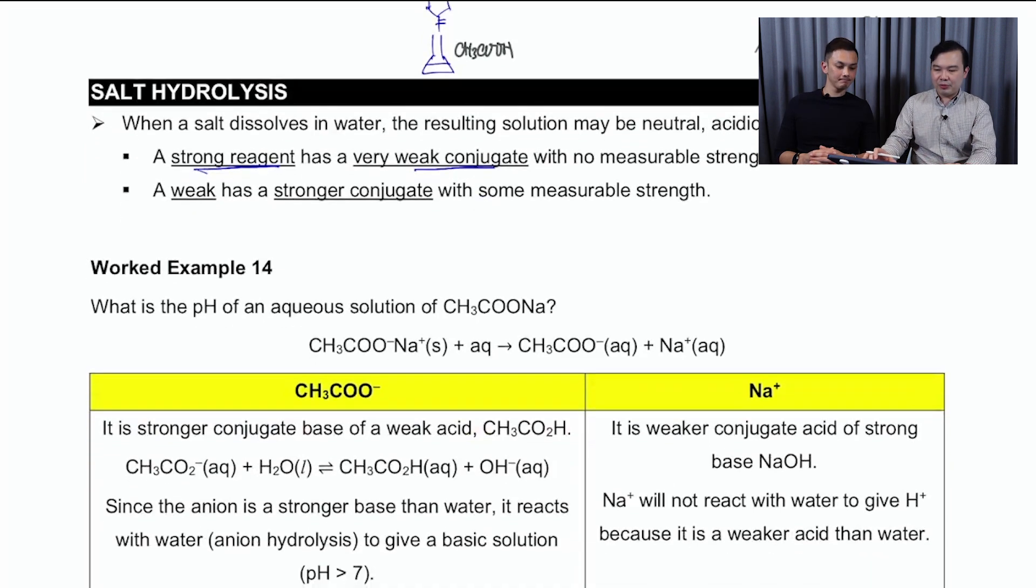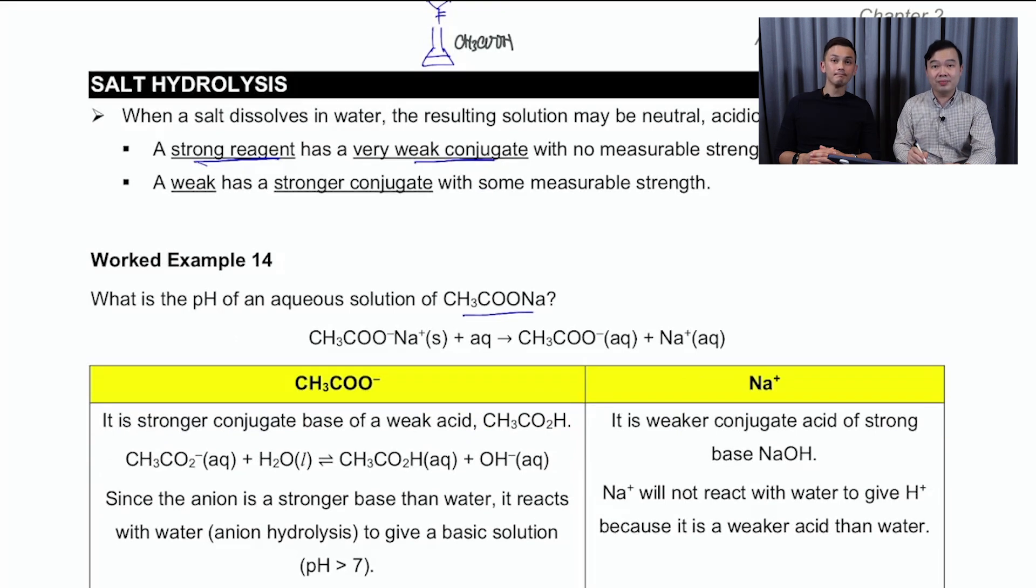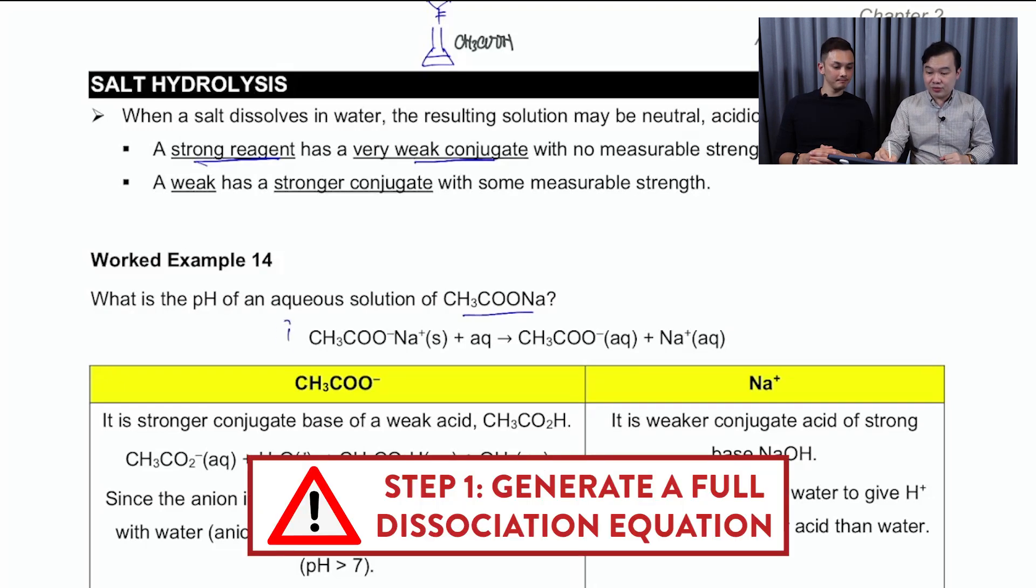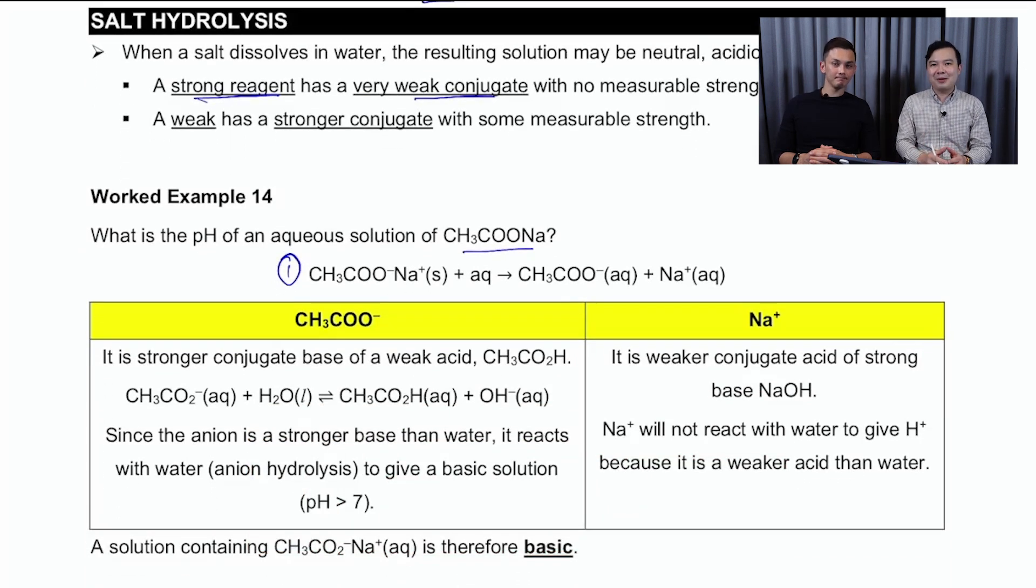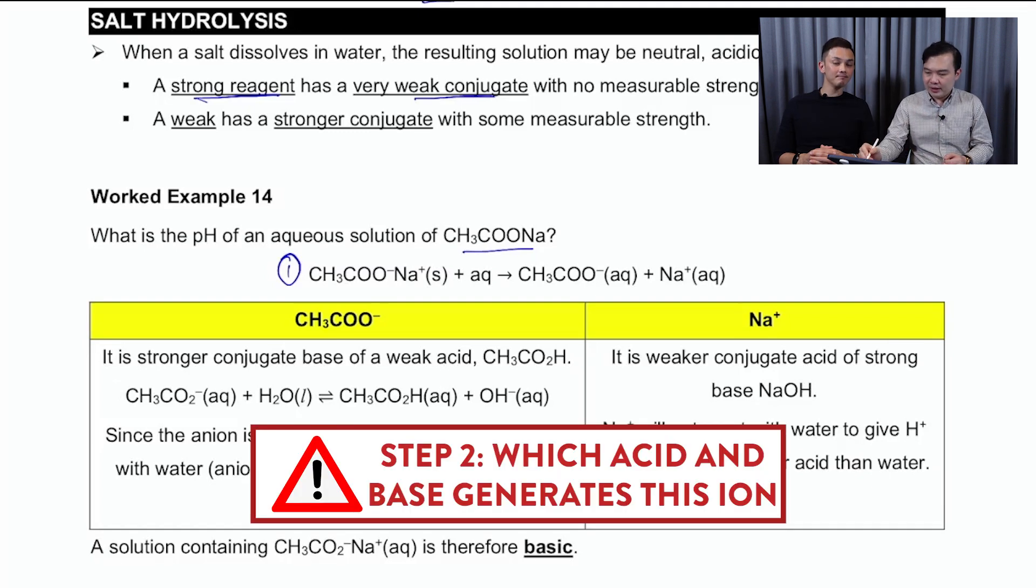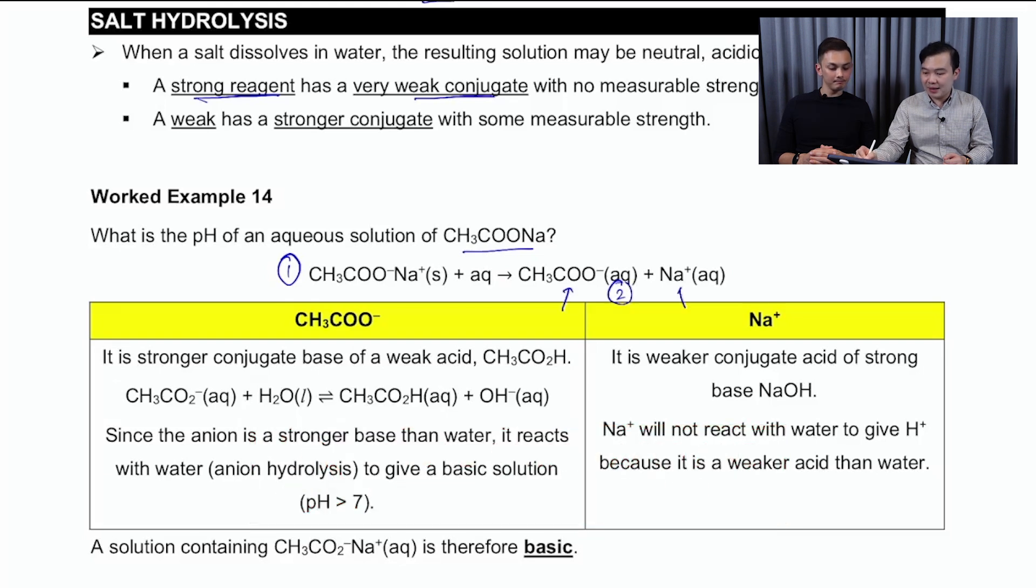That is coming onto these notes over here. It tells us that if you start off with a strong reagent, then its conjugate will always be weak. And of course, the vice versa is true. Now let's take a look at the salt that we have produced earlier. That is your sodium ethanoate. And in order to determine whether is it acidic, neutral or basic, we're going to follow three major steps. Step one is to generate a full dissociation equation to show me what are the ions that are present in the salt solution.